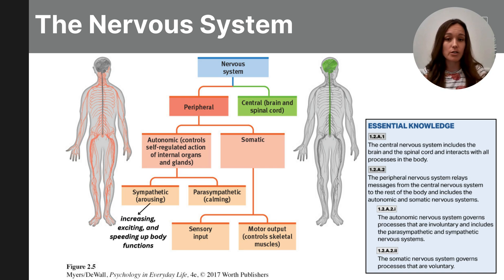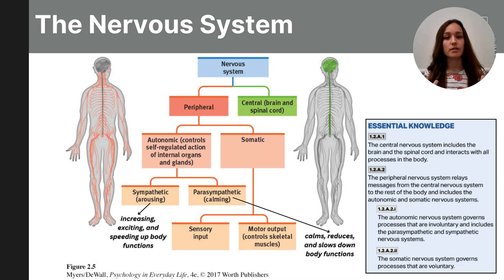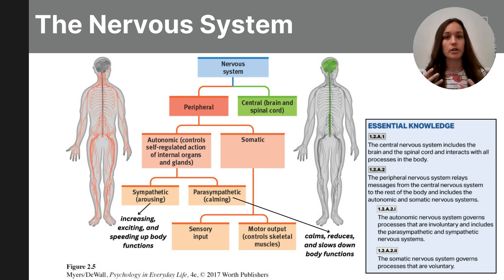The sympathetic nervous system sends involuntary messages that increase body functions — speeding up heart rate, breathing, and perspiration. Whereas the parasympathetic nervous system calms or slows down those functions, slowing your heart rate and calming your breathing and respiration. These are things you have no control over and are involuntary, part of the peripheral and autonomic nervous system.